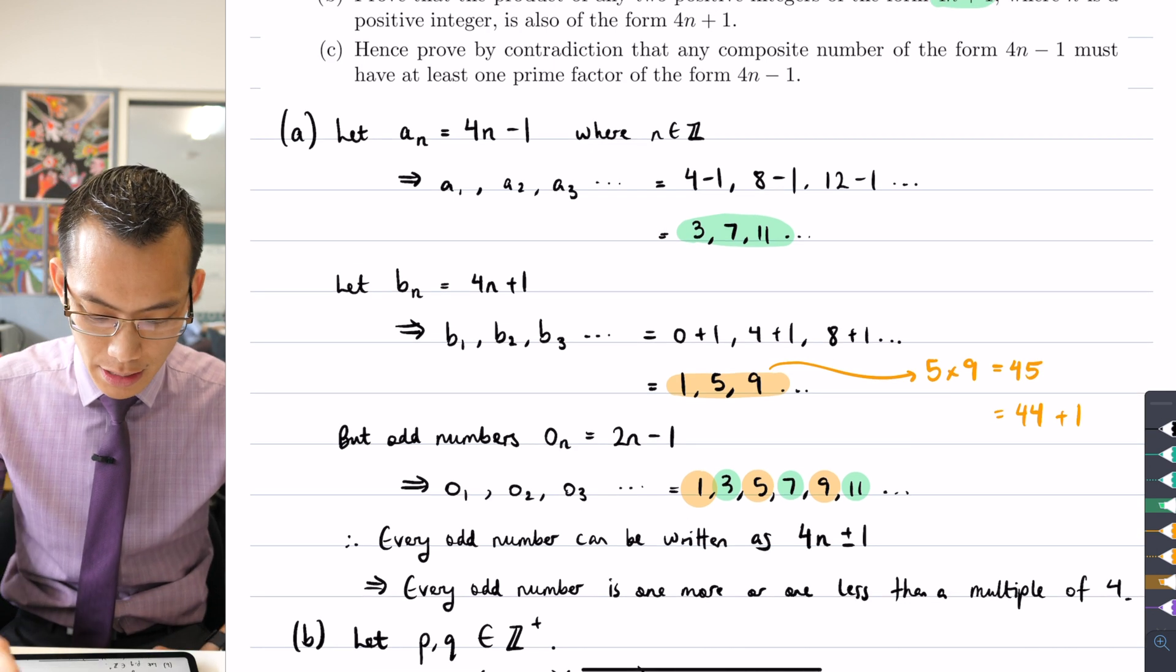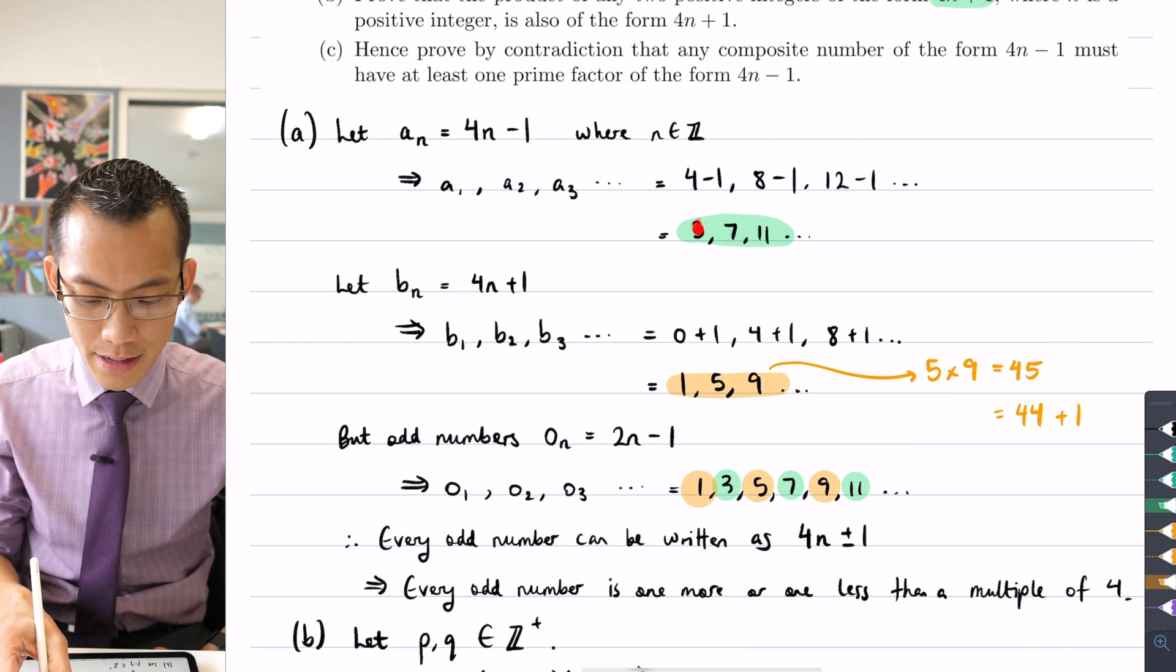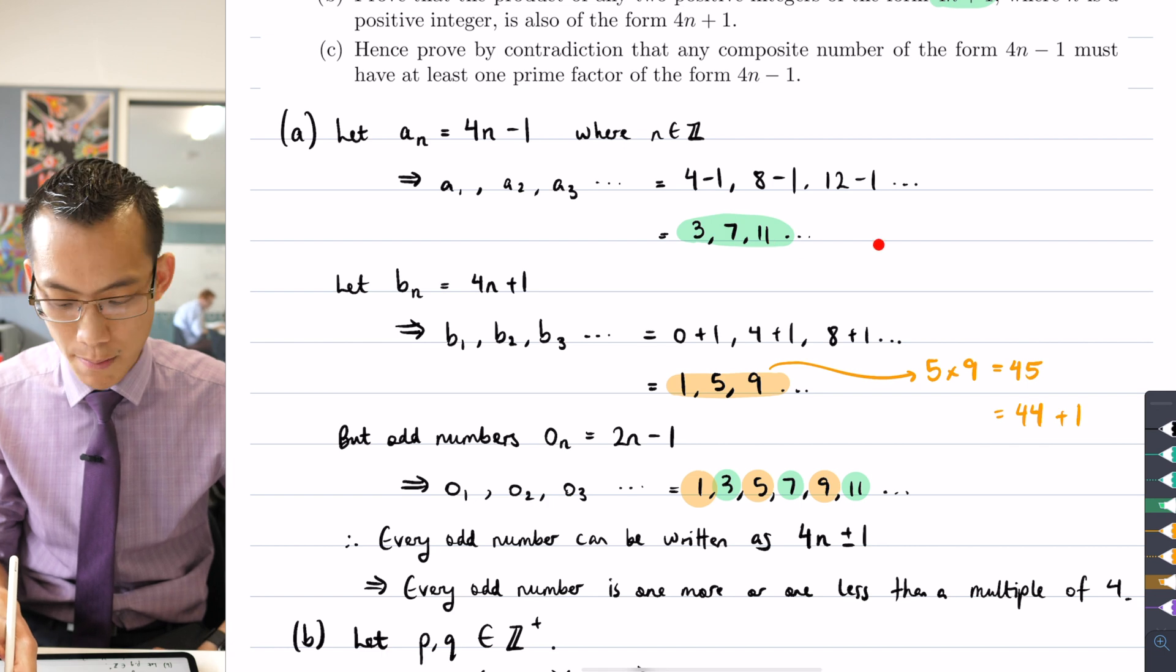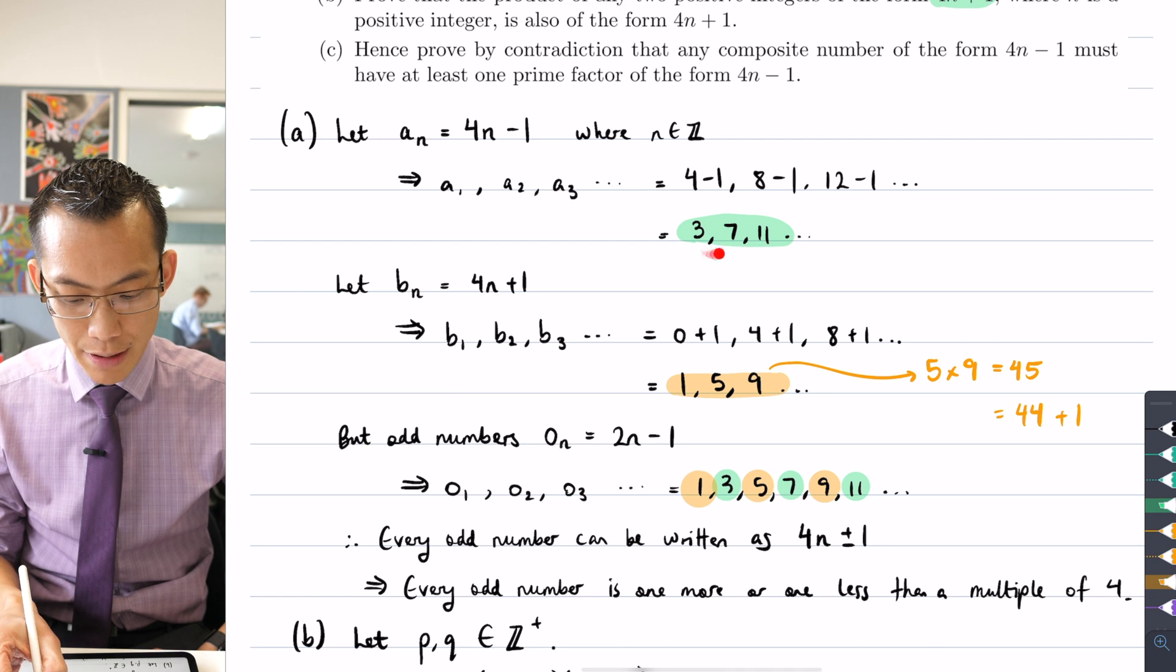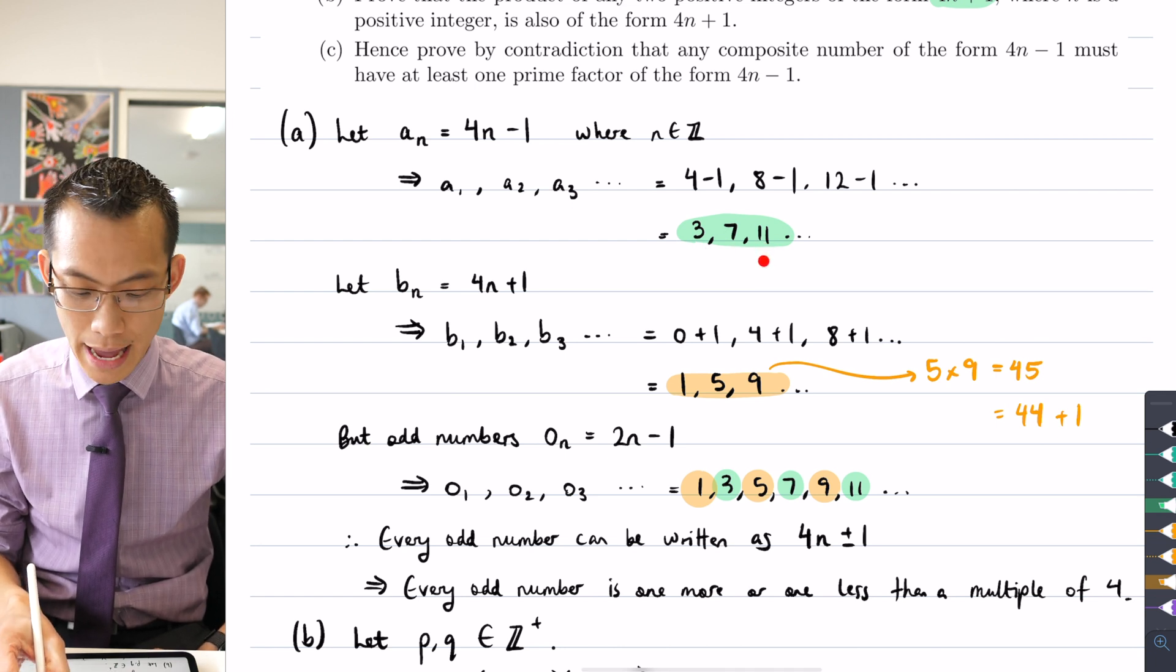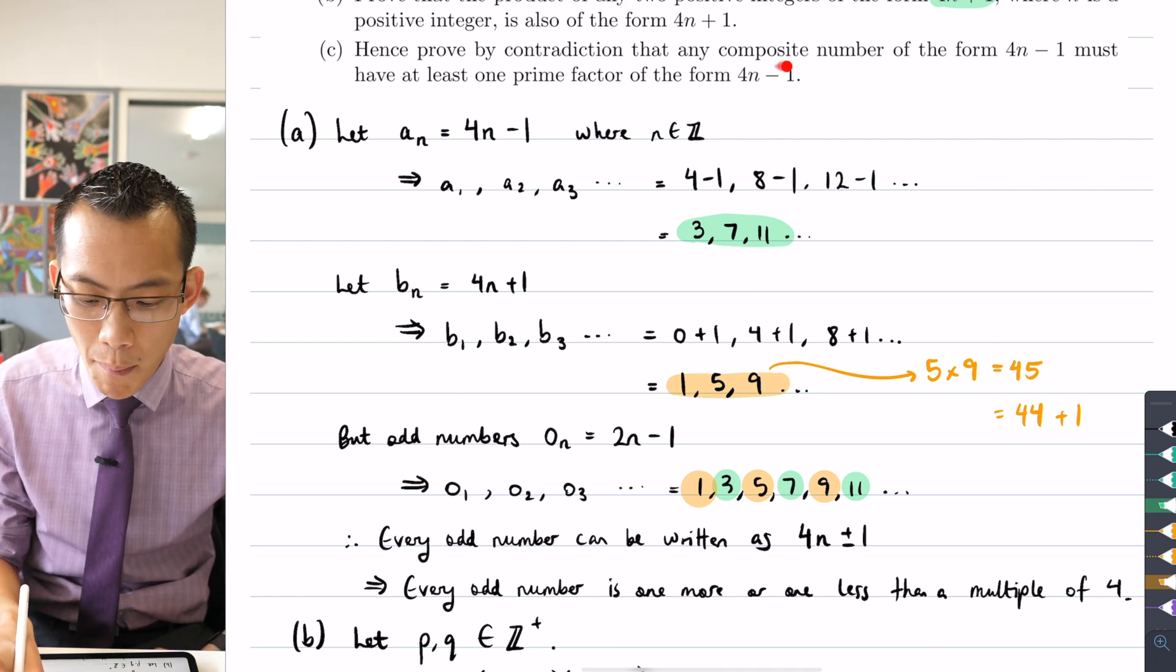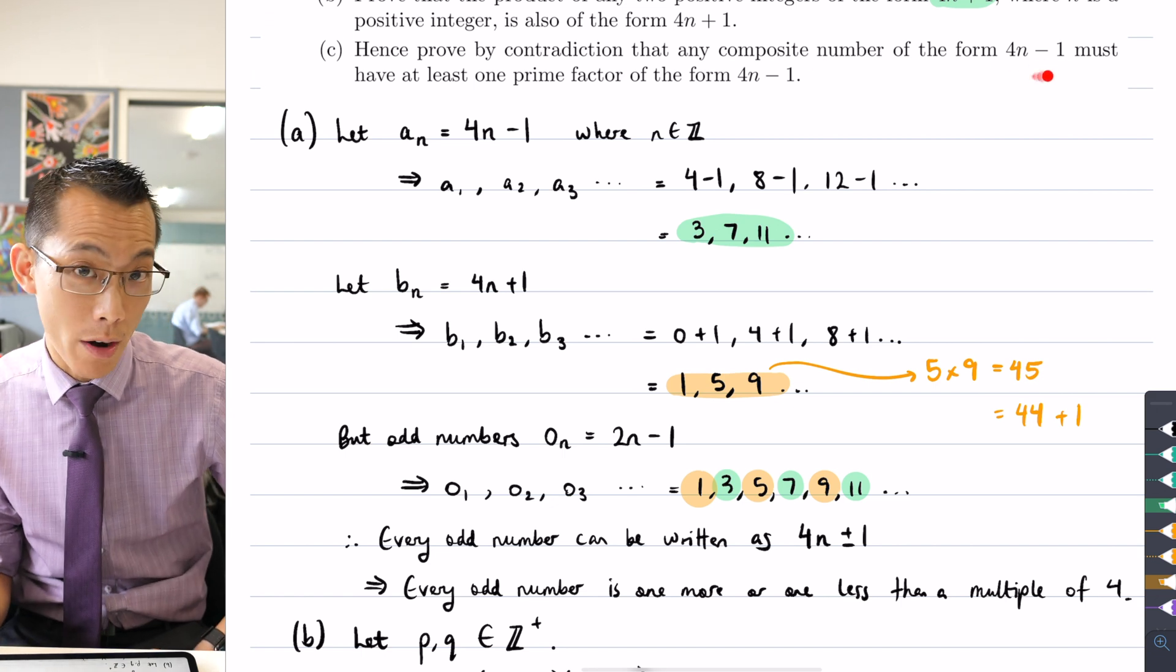So what they're saying is, what we want to prove is if you have a look at this 4n minus 1 sequence of numbers, I need to go a little bit further actually because all of the 4n minus 1s that I've got are 3, 7, 11, they're all prime and what they're interested in here is the composite numbers that are in this 4n minus 1 format.